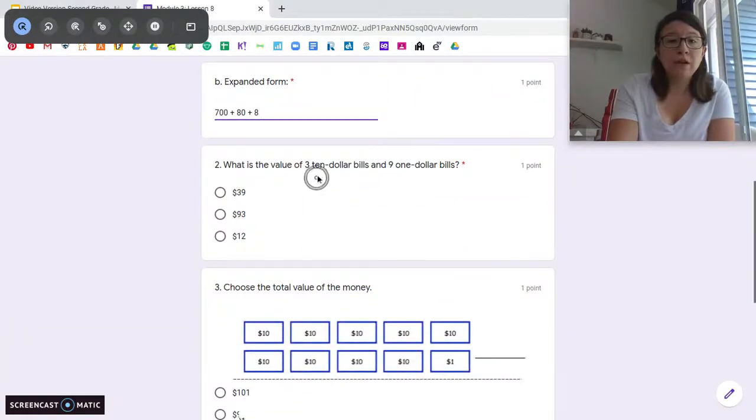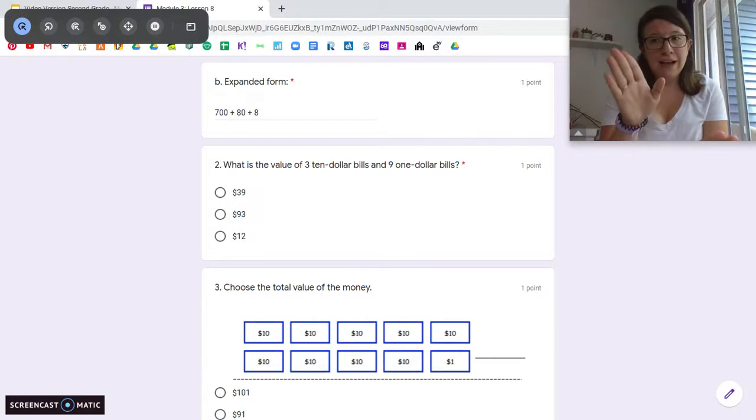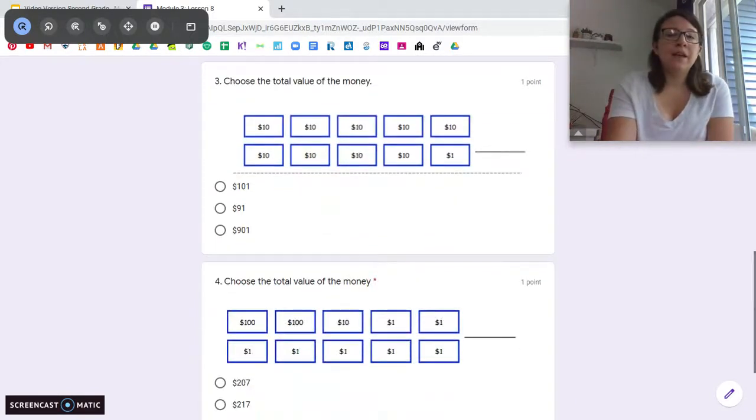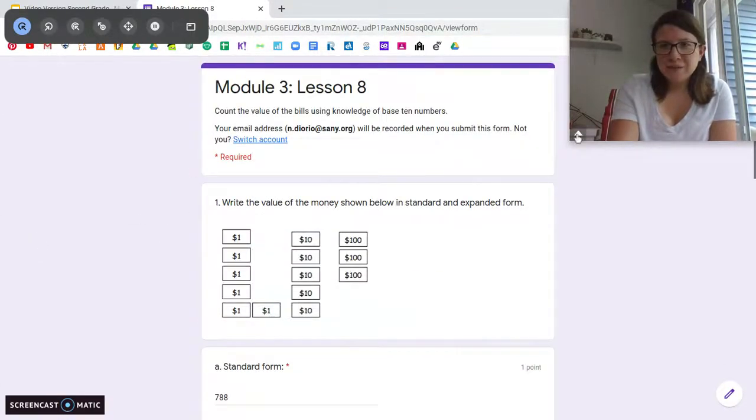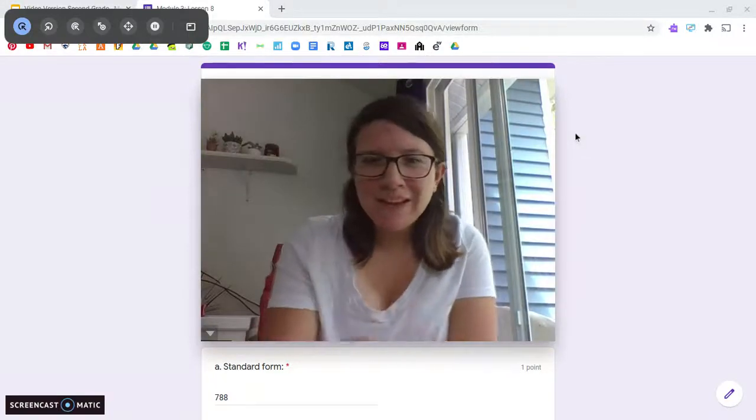Okay. Number two, you're going to tell me the value of three $10 bills and nine $1 bills. Draw it out if you need to or think about your tens and ones. Three tens, nine ones. Three $10 bills, nine $1 bills. And then same thing down here. You're going to count your $10 bills and count your $1 bills. Tell me how much money. Count your $100 bills. Count your $1 bills. Tell me how much money. And that's it for today. Great job, everybody. And I will see you next time.